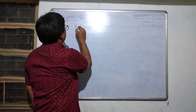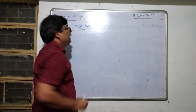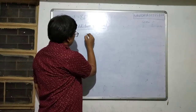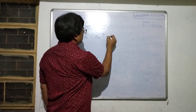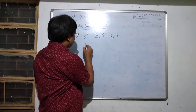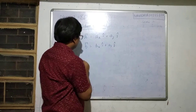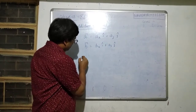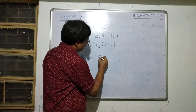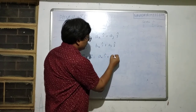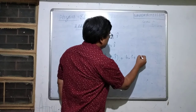Now we look at addition of vectors. Let A vector = Ax·i-cap + Ay·j-cap and B vector = Bx·i-cap + By·j-cap. When we add these two vectors together, A vector plus B vector equals Ax·i-cap + Ay·j-cap + Bx·i-cap + By·j-cap.